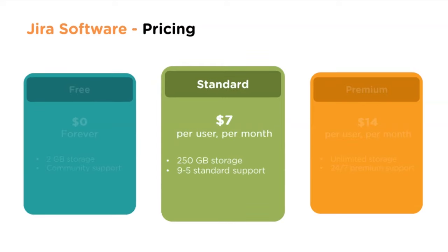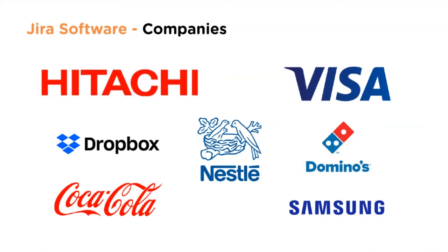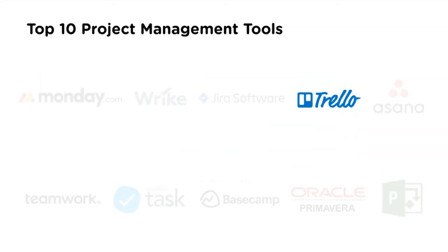Jira Software pricing: the free tier includes 2 GB storage and community support at $0. Standard is $7 per user per month with 250 GB storage and 9-to-5 support. Premium is $14 per user per month with unlimited storage and 24/7 premium support. Jira is used by Hitachi, Visa, Dropbox, Nestlé, Domino's, Coca-Cola, and Samsung.